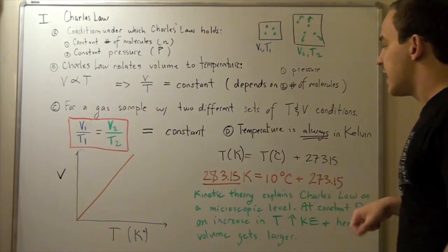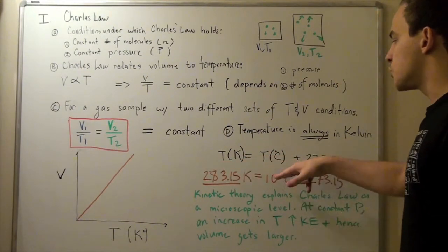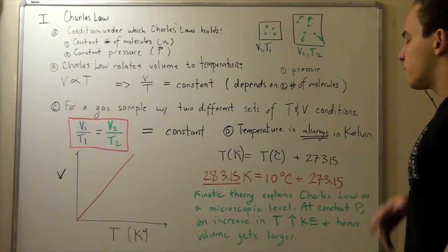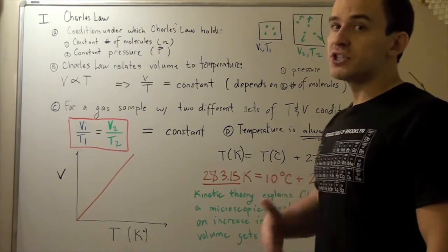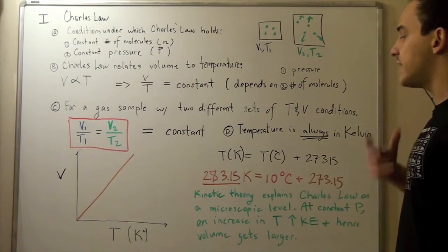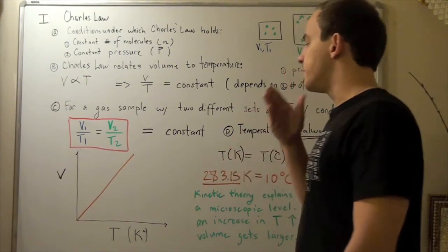To get the Kelvin temperature, you take the Celsius temperature and you add 273.15 to it. For example, if our Celsius temperature is 10 degrees Celsius, I simply add 273.15 and I get 283.15 Kelvin.